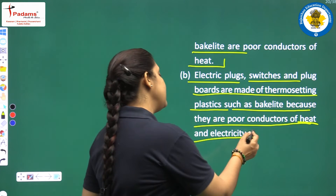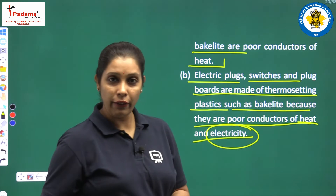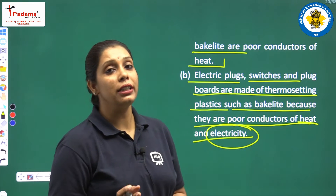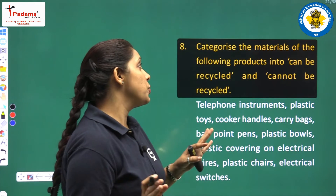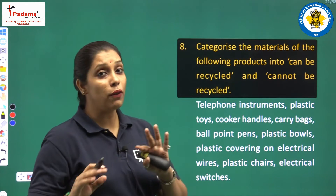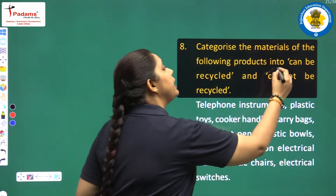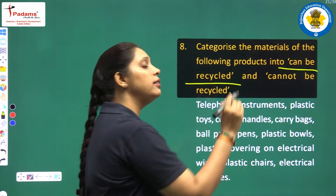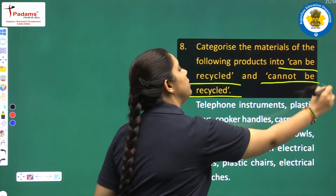Here we have to add electricity as well. Let us proceed to the next question: categorize the materials of the following products into can be recycled and cannot be recycled.